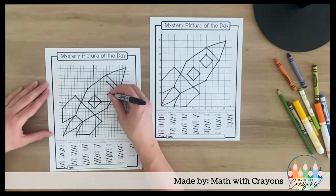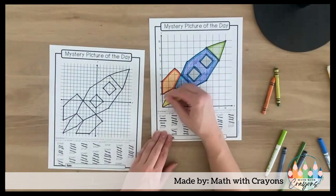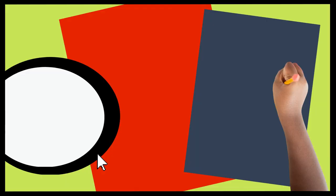Page two is a four quadrant graph that suits your more independent students. The great part is that their mystery picture is the same, making differentiation in your class a breeze.